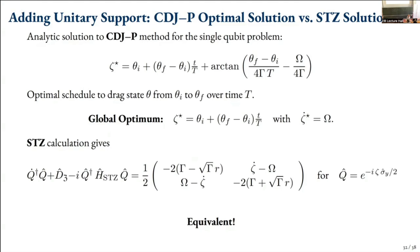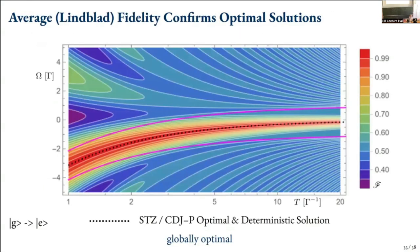This plot shows the single qubit going from G to E. The color bar shows fidelity for average Lindblad dynamics. The dotted line is where people normally think about Zeno dragging — when time is very long or measurement rate gamma^{-1} is very large, requiring T to go to infinity to get unit fidelity. But with our CDJ or STZ approach, we can come in at much shorter times and still stay on the black line — achieving perfect fidelity with very fast dragging. This is a globally optimal protocol.